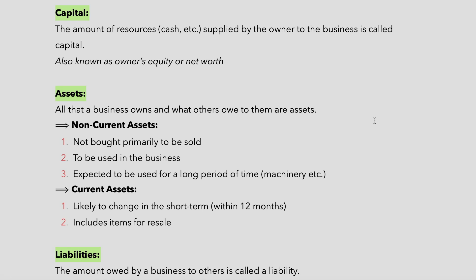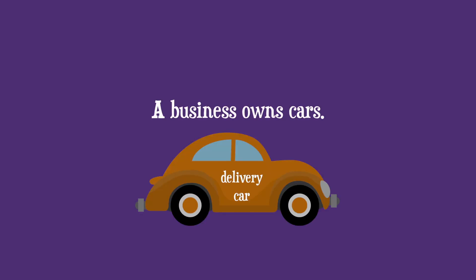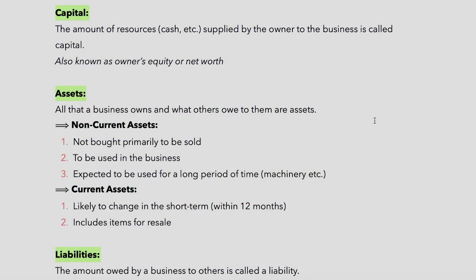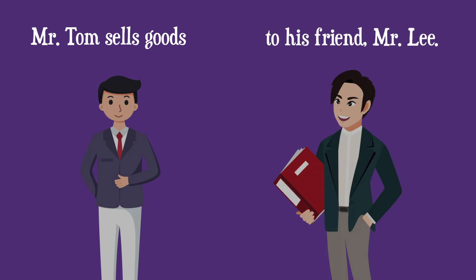Now that we've understood capital, let's move on to assets. Assets are all that a business owns and what others owe to them. The first part — all that a business owns — for example, if a business owns cars used for deliveries, that is an asset. Something they're about to sell, such as inventory, is also an asset, because they still own those items even if they're about to sell them.